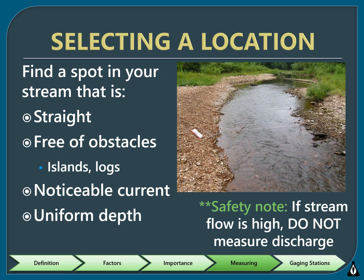The first step in measuring discharge is selecting an appropriate location. The ideal location is straight, free of obstacles like gravel bars, large rocks, or trees, and has noticeable flow. If you cannot find such a location in your 300-foot stream stretch, this is the only parameter where monitors are allowed to venture outside their designated stream stretch to find a good spot, as long as there are no inputs or outputs such as tributaries between the site location and the discharge measurement location.